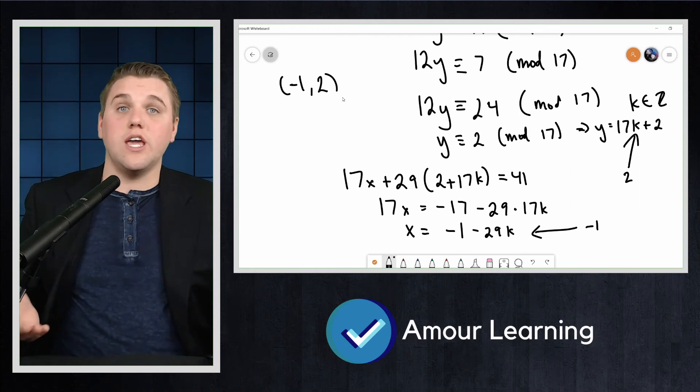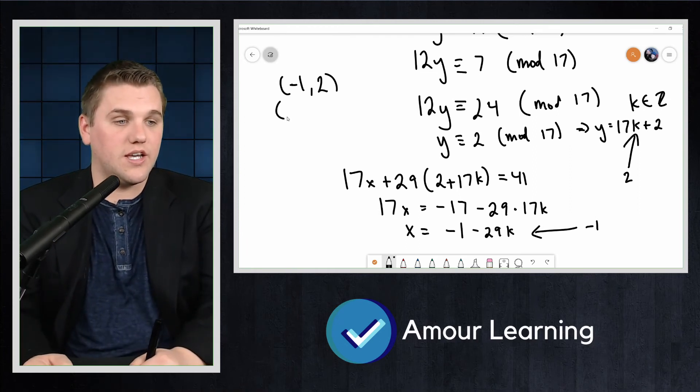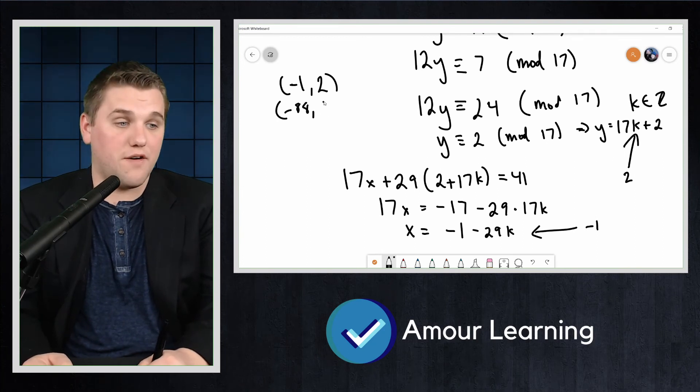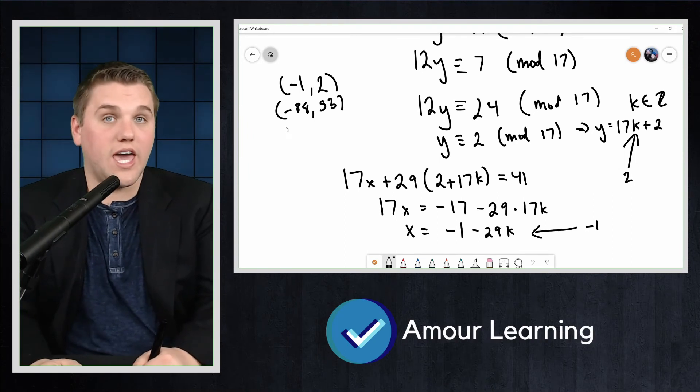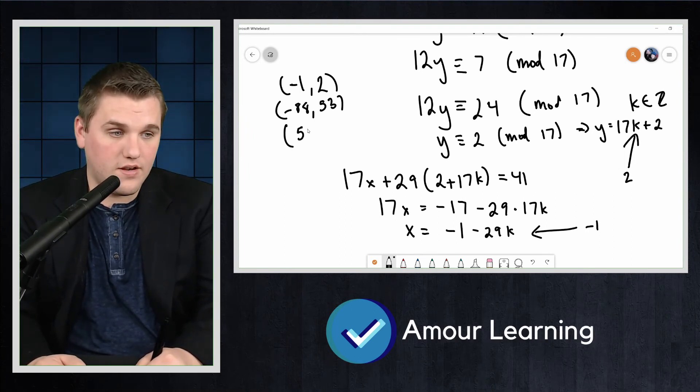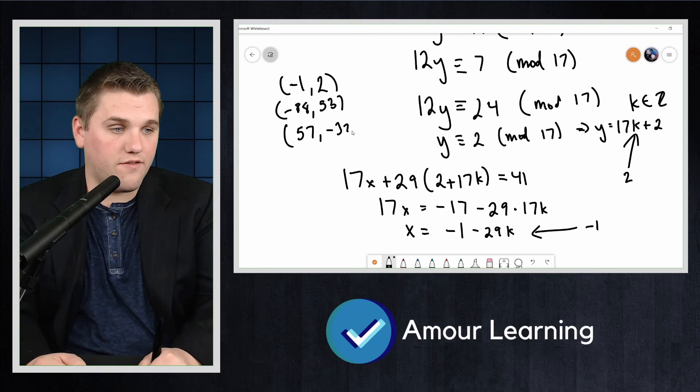If k = 3, the solution is (-88, 53). If k = -2, we get (57, -32).